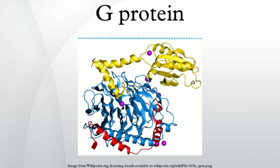The G-protein activates a cascade of further signaling events that finally results in a change in cell function. G-protein coupled receptors and G-proteins working together transmit signals from many hormones, neurotransmitters, and other signaling factors. G-proteins regulate metabolic enzymes, ion channels, transporters, and other parts of the cell machinery, controlling transcription, motility, contractility, and secretion, which in turn regulate diverse systemic functions such as embryonic development, learning and memory, and homeostasis.